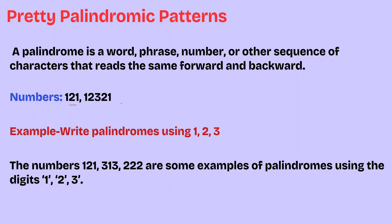Let us see an example: write palindromes using the digits 1, 2, 3. Here, 121 is an example of a palindromic number. Also 333 and 222 are examples. Similarly, we can write 323 and 232. These are also examples of palindromic numbers using 1, 2, 3.